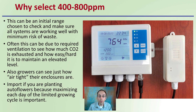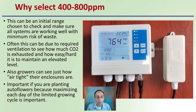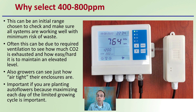Why would you select this range of 400 to 800 parts per million? This can be an initial range chosen to check that all systems are working well, with minimum risk of wasting carbon dioxide, which can get expensive. This often involves checking required ventilation to see how much CO2 is exhausted and how easy or hard it is to maintain levels. Growers can also see just how airtight their enclosures actually are. It's especially important for autoflowers, since maximizing each day of the limited growing cycle is critical. While many growers will shoot higher than 800 ppm, the 400 to 800 range is a great way to run final checks before trying different levels or determining if CO2 enrichment will work for your operation.